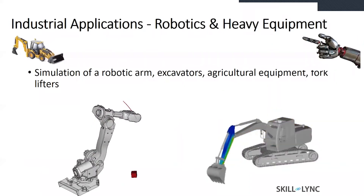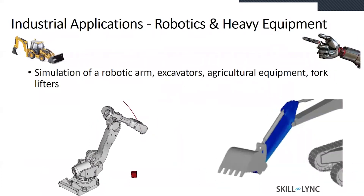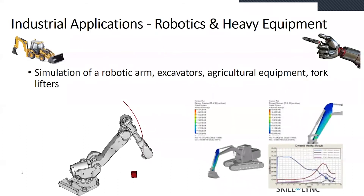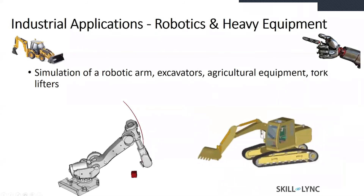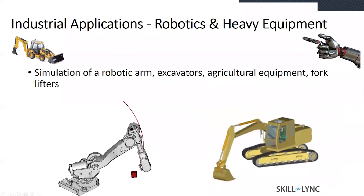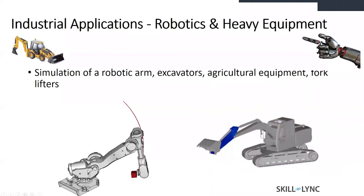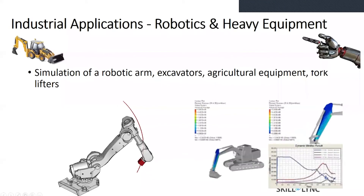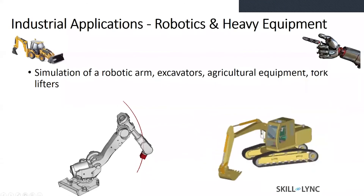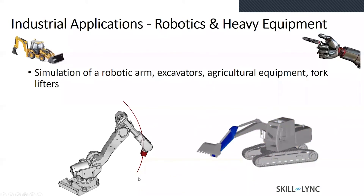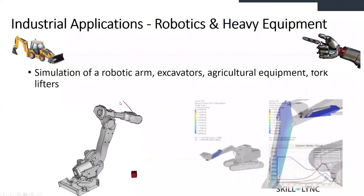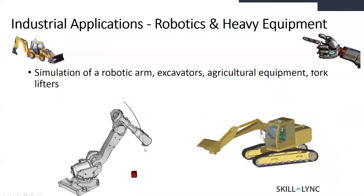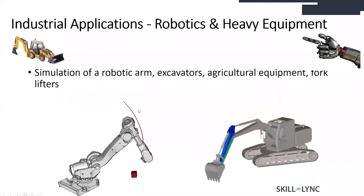For those interested in the robotics and heavy equipment industry, MBD is also used here as shown in these animations. The CAD geometry of a robotic arm can be directly imported from any CAD software into MBD, then joints and motions need to be created. Once that is done, you can simulate the robotic arm picking up a box. This trajectory can be defined in MotionView using a curve.